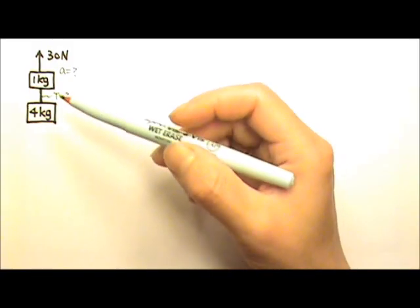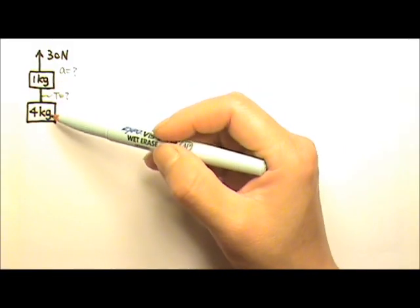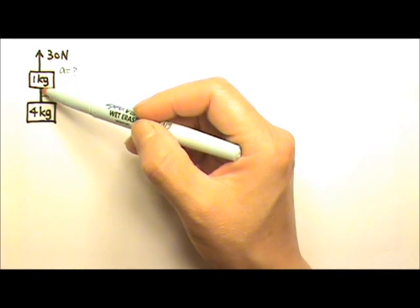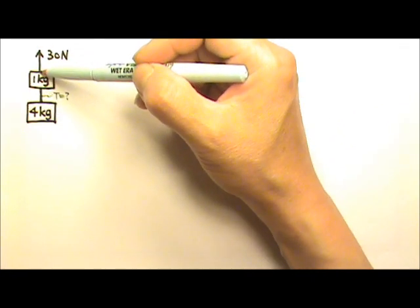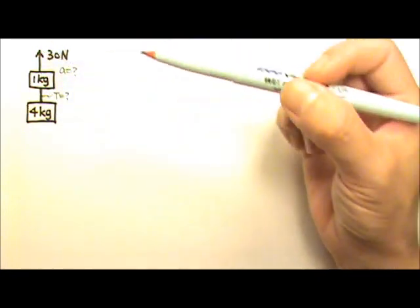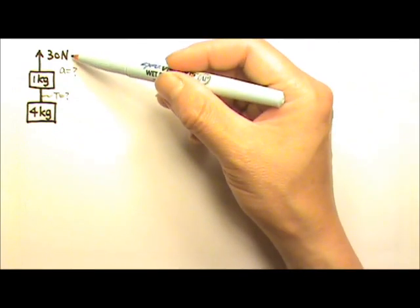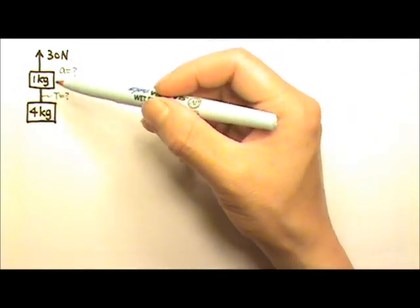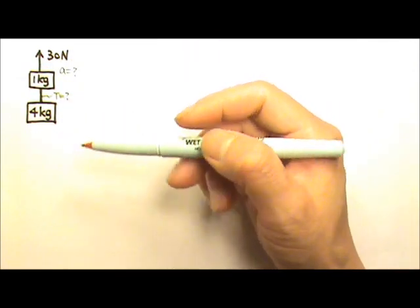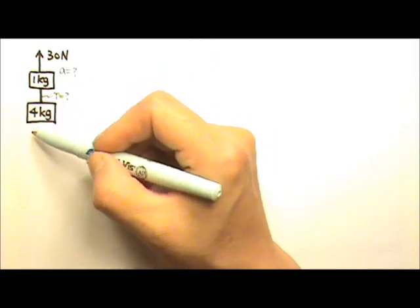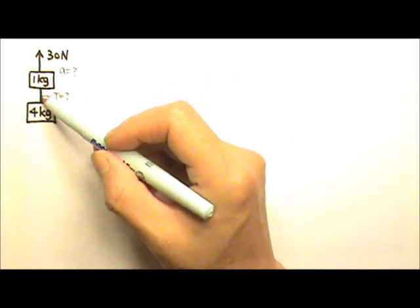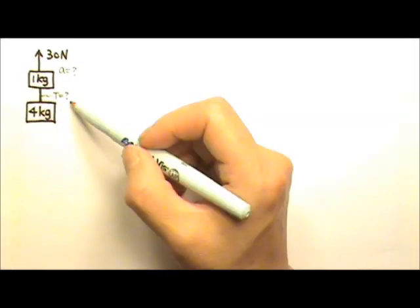Here I have a multi-object problem — two boxes attached by a string, with an applied force of 30 newtons pulling on the system up here. We're looking for the acceleration of the system and the tension in the string.